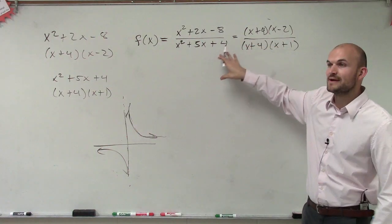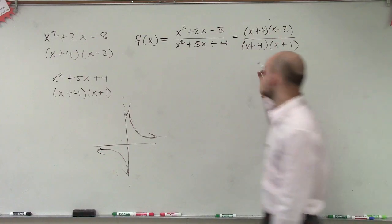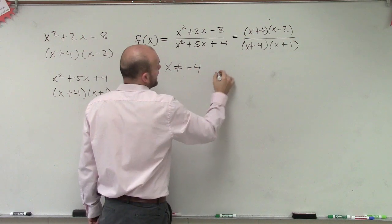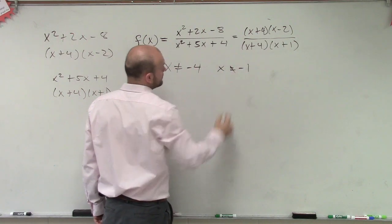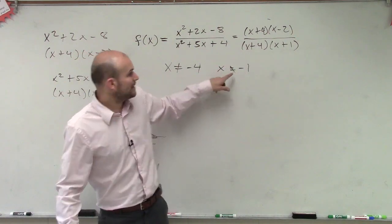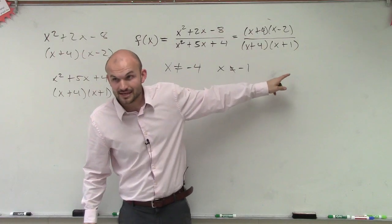So we look at this and say, when is my graph undefined for this problem? It's undefined at, we say x cannot equal negative 4, and x cannot equal negative 1, right? Because when x equals negative 4, it's 0 on the bottom. When x equals negative 1, it's 0 on the bottom. Does everybody agree with that? Yes? OK.